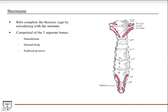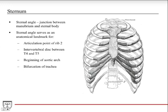For the sternum, which is the point where all the ribs come together, it's three separate bones: you have the manubrium superiorly, the body of the sternum, and then the xiphoid process. An important anatomical landmark — very high yield, useful in anatomy classes and in the real world in the operating room and clinics — is the sternal angle, which is where the manubrium joins the body of the sternum.